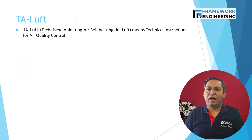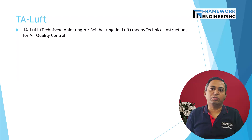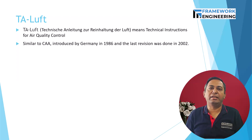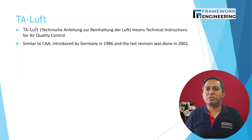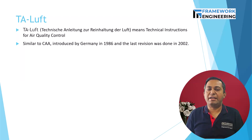Similarly, TA-Luft — which means Technical Instructions on Air Quality Control — was introduced by Germany in 1986, with several updates up to 2002, so the latest version is from 2002. There is a test done by a different standard, VDI 2440, where the acceptable leakage rate is 10 raised to minus 4 millibar·litre per second for temperatures up to 250 degrees centigrade.